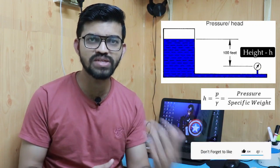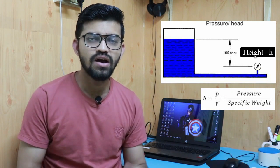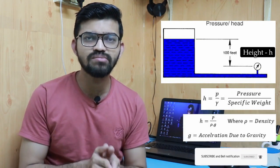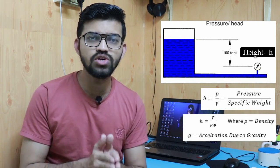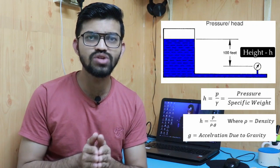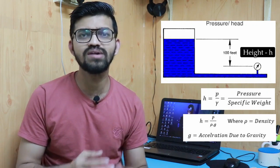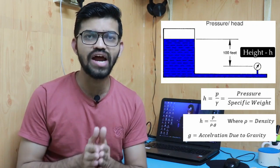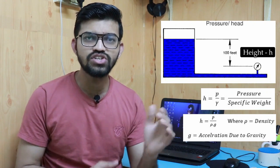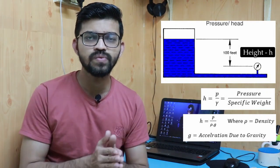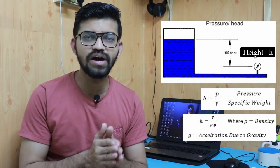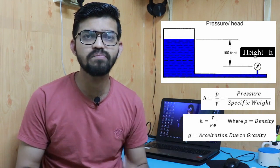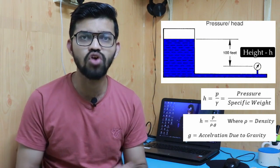We can denote specific weight by gamma, where gamma is nothing but density (rho) multiplied by acceleration due to gravity (g). So ultimately, the formula for pressure head becomes h = p divided by rho times g.